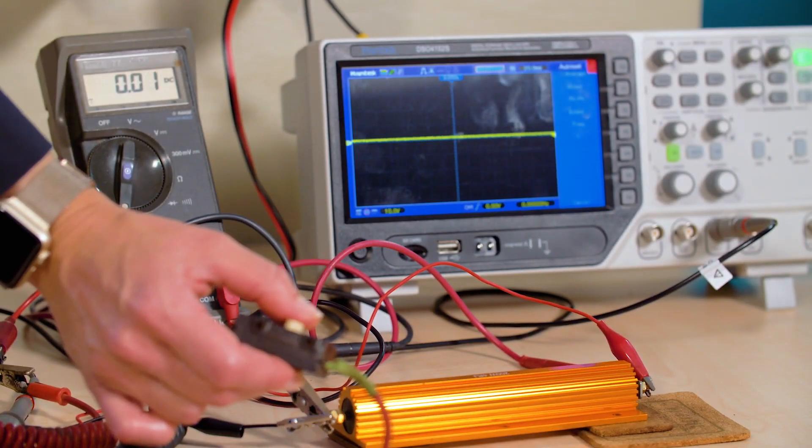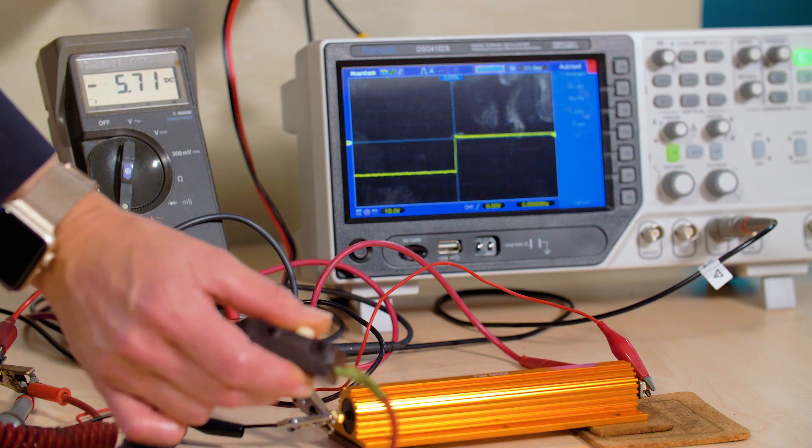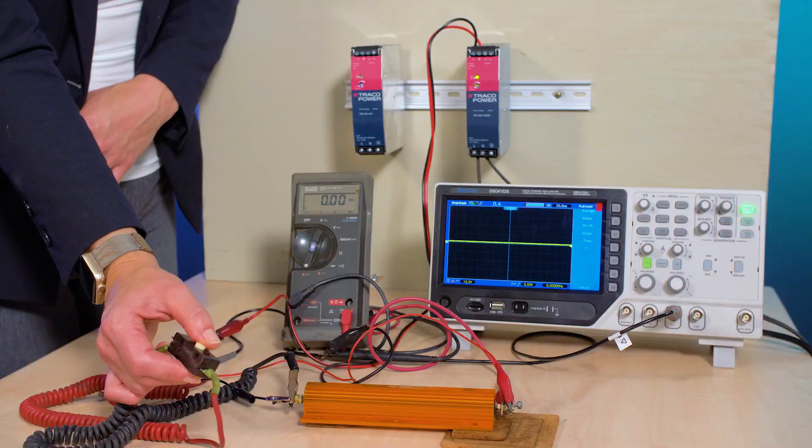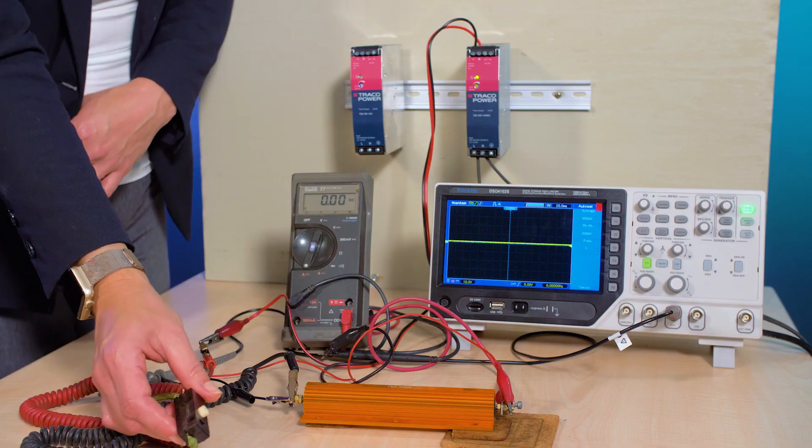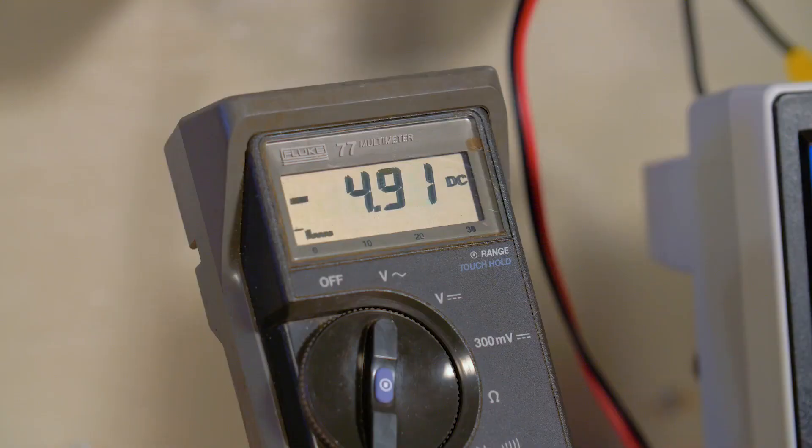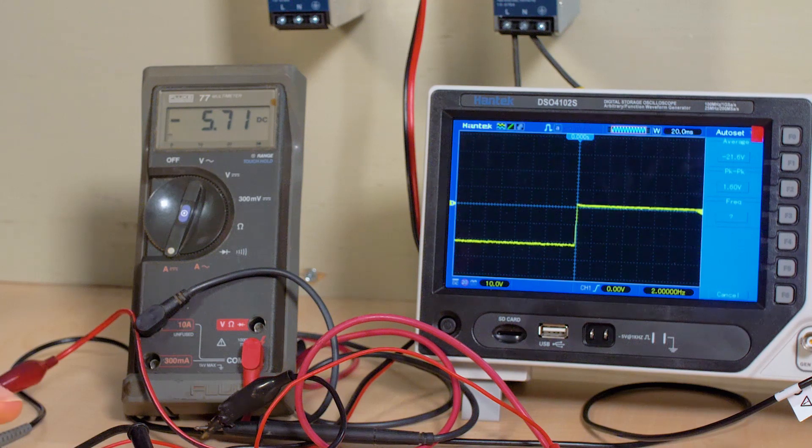But we can generate the overpower condition manually by switching a low ohm power resistor into the output for a few seconds using a push button connection. When we do that you can see from our oscilloscope across the supply output terminals that the supply holds regulation and according to our current meter in the output we're pulling close to seven and a half amps when the push button closes.